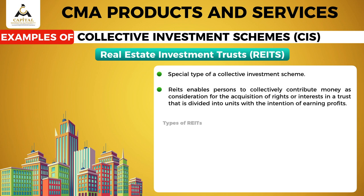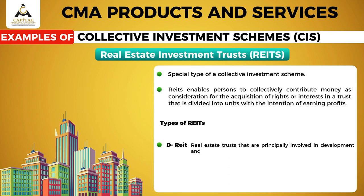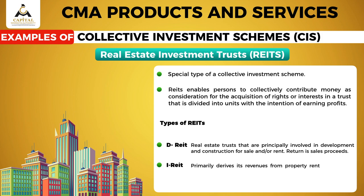There are two types of REITs. D-REITs are real estate trusts that are principally involved in development and construction for sale and/or rent, and the return is sales proceeds. The I-REIT primarily derives its revenues from property rentals, and the return is rental income.